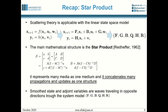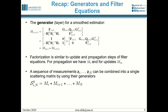To recap the previous theory: scattering theory is applicable to linear state space models, so for nonlinear functions we first linearize them to obtain a linear state space model, and then use the system matrices in a structure called the star product. With this star product we can concatenate many propagations and updates into one structure using generators. There are generators for updates and generators for propagation, and the factorization is similar to the update and propagation routines for filter-based estimators. At the bottom you can see a scattering matrix built up from different generators corresponding to measurements Z_i through Z_N.